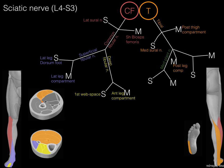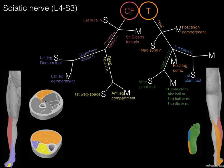The tibial nerve at the tarsal tunnel is going to bifurcate. One branch is the medial plantar nerve, which courses along the medial plantar surface of the foot, providing sensory distribution primarily. Its motor division is the first lumbrical and intrinsic foot muscles: abductor hallucis, flexor hallucis brevis, and flexor digitorum brevis. The other branch is the lateral plantar nerve, which gives rise to sensory on the lateral plantar surface of the foot, and its motor distribution is to the rest of the foot muscles.